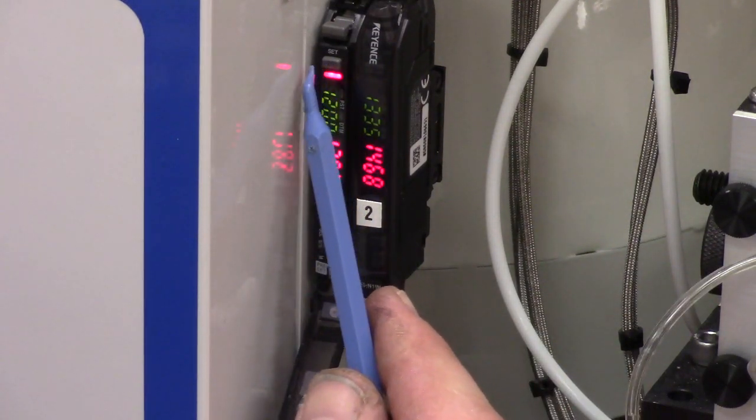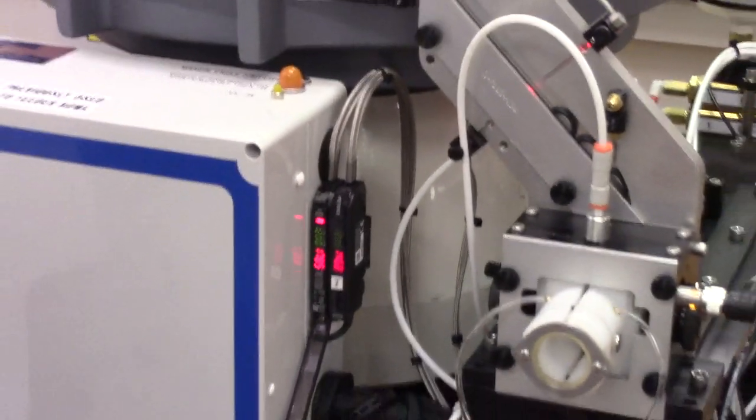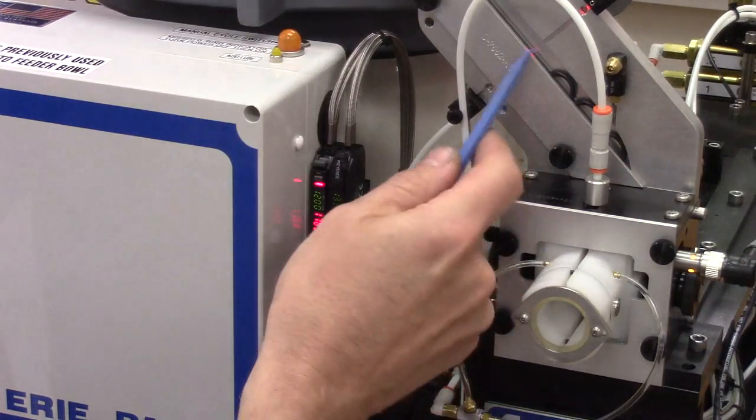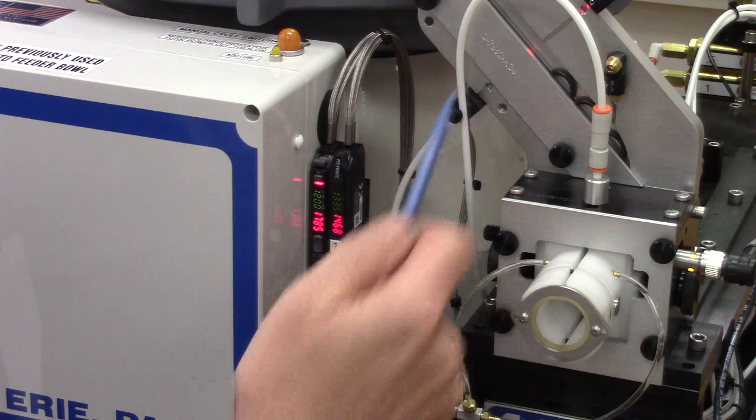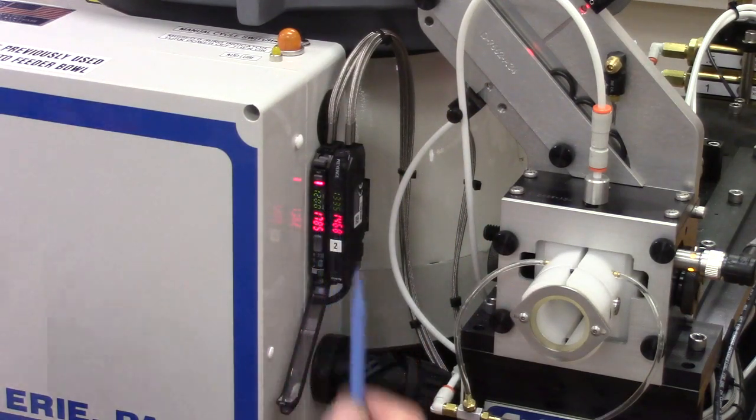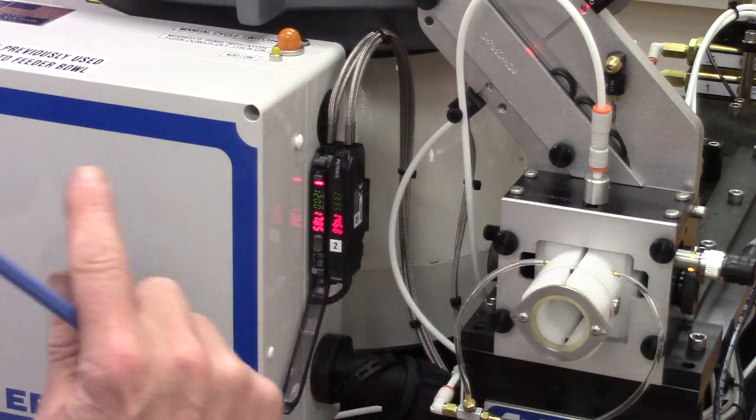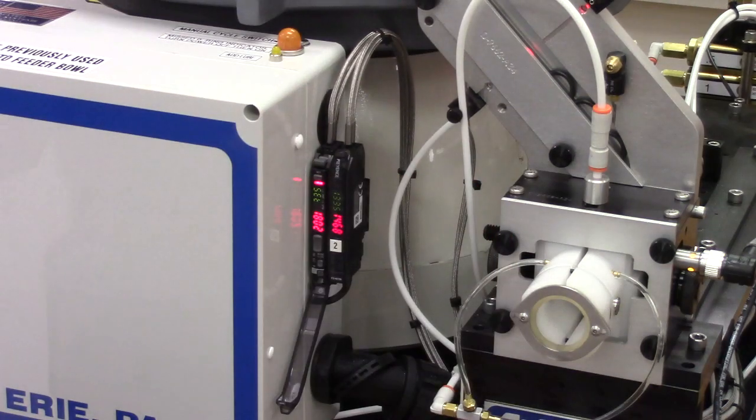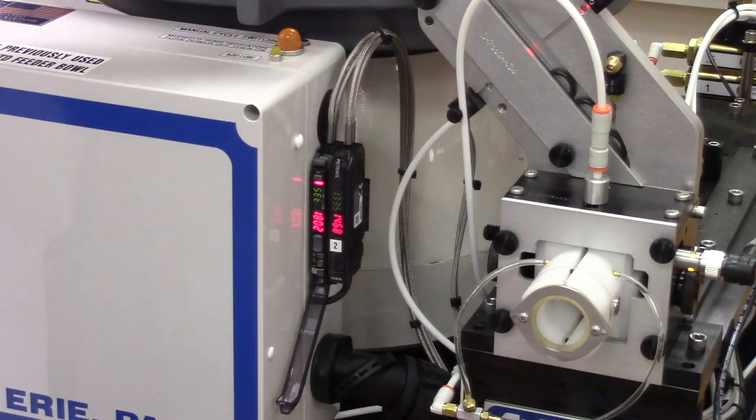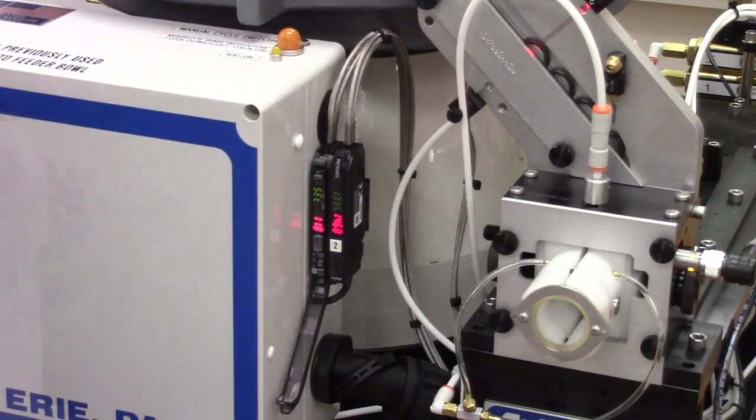Right now I have no o-rings in the track here where the eyes look across. We're going to teach it. I should mention that I have the bowl shut off right now. We hit the set button once, and I'm going to put an o-ring in the way of the track slot there and press the set button a second time.